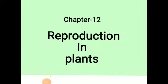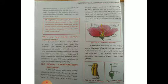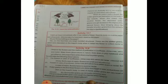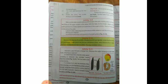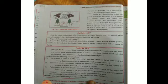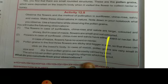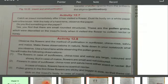Good morning 7th class. Today we are going to complete chapter number 12, that is reproduction in plants. Last time we had discussed pollination and the types of flowers that can be part of wind pollination or water pollination. So this time I am continuing your book reading — last time we discussed activity 12.8, and today we are going to discuss the next page.